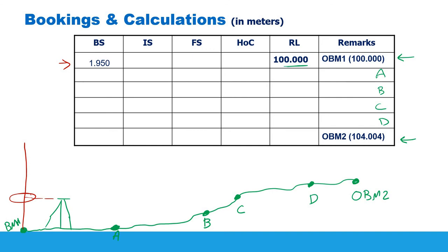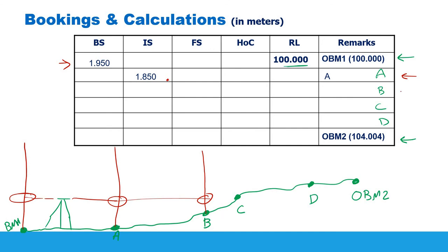I will move the leveling staff towards A, sight the staff over A, get the intermediate sight reading, and write it down on the line for A — the intermediate sight is 1.850. Then I move the leveling staff to point B, sight it, and collect the reading, which is the fore sight over B. I write down the number here, which is 0.980.